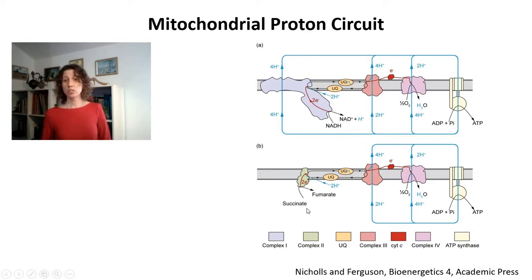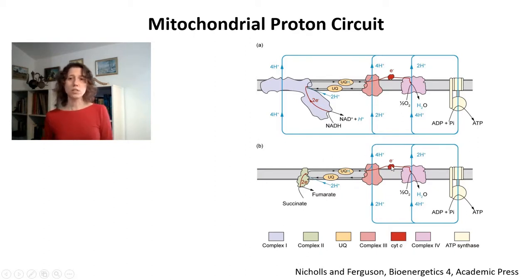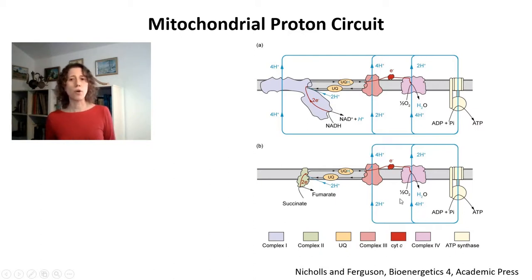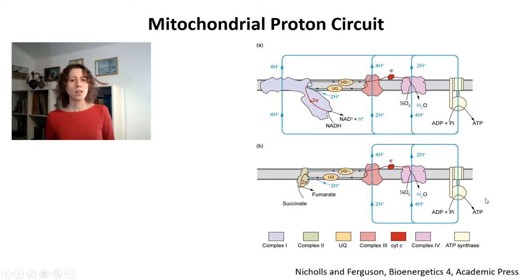FAD-linked substrates, such as succinate, are going to donate electrons from their dehydrogenases to ubiquinone, then complex III, cytochrome C, complex IV. So you're going to have less protons pumped because you're only going to have protons pumped through complex III and complex IV, but also generating this proton circuit in which protons come back through ATP synthase. This is associated with the release of ATP within the mitochondrial matrix.